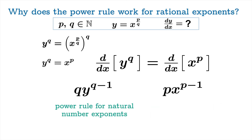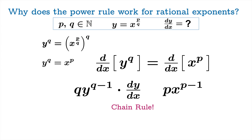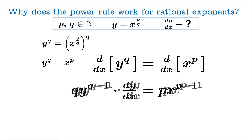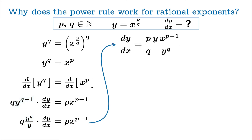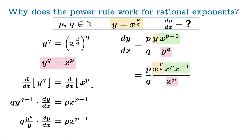The left side gives q times y to the q minus 1, but since we're differentiating with respect to x, the chain rule requires us to multiply by dy/dx. Setting the two sides equal and solving for dy/dx: we use a law of exponents to rewrite y to the q minus 1 as y to the q divided by y. Substituting back — y equals x to the p over q and y to the q equals x to the p — we get an expression for dy/dx.